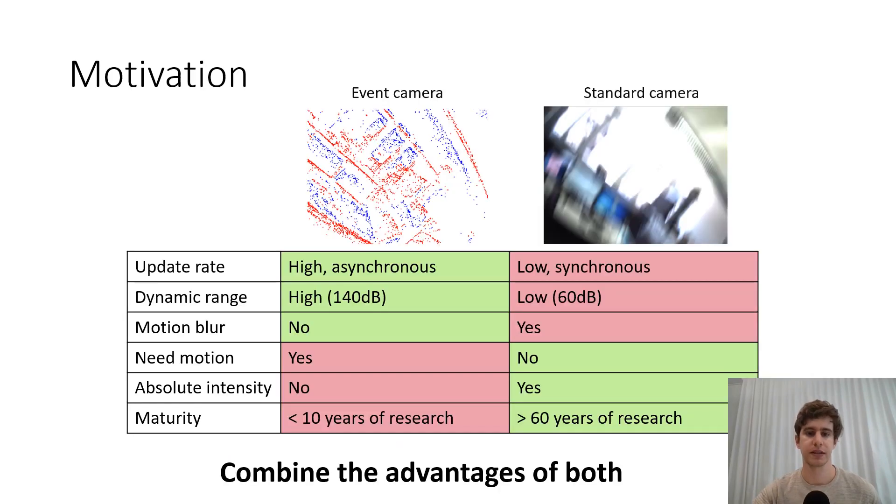Event cameras and standard cameras are complementary sensors. While event cameras have a high asynchronous update rate, high dynamic range, and do not suffer from motion blur, they only measure changes in intensity and thus need motion to perceive their environment. Instead, standard cameras have a low synchronous update rate, a low dynamic range, and do suffer from motion blur. However, they measure a rich representation of the absolute intensity of the environment and thus do not need motion.